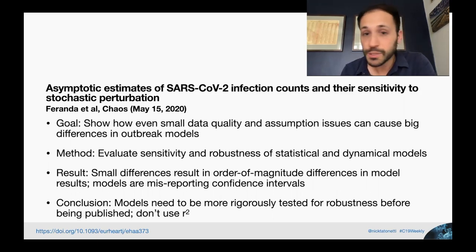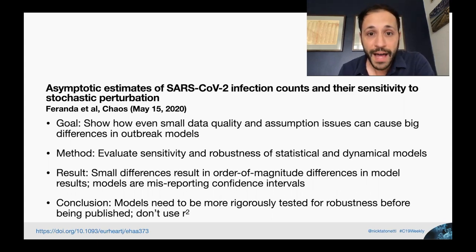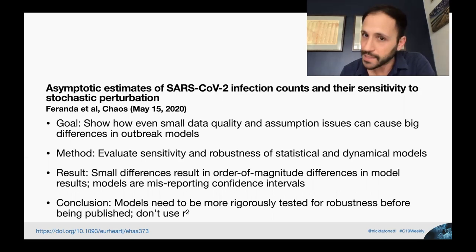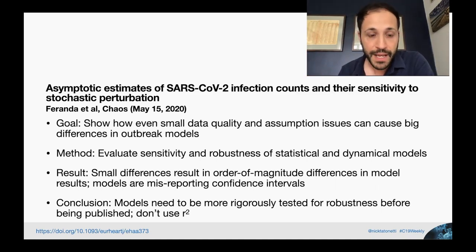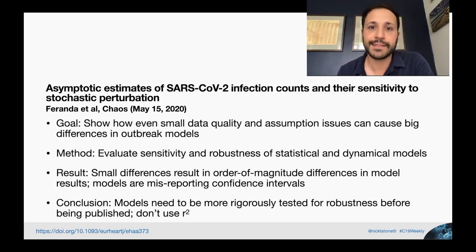The method they used was actually really straightforward. It was simply to evaluate the sensitivity and robustness of existing models — either dynamical, stochastic, or statistical — and to evaluate how sensitive they were to their initial conditions or the assumptions made for their parameters. They found that small differences result in order-of-magnitude differences in predictions, and that models are likely misreporting confidence intervals.